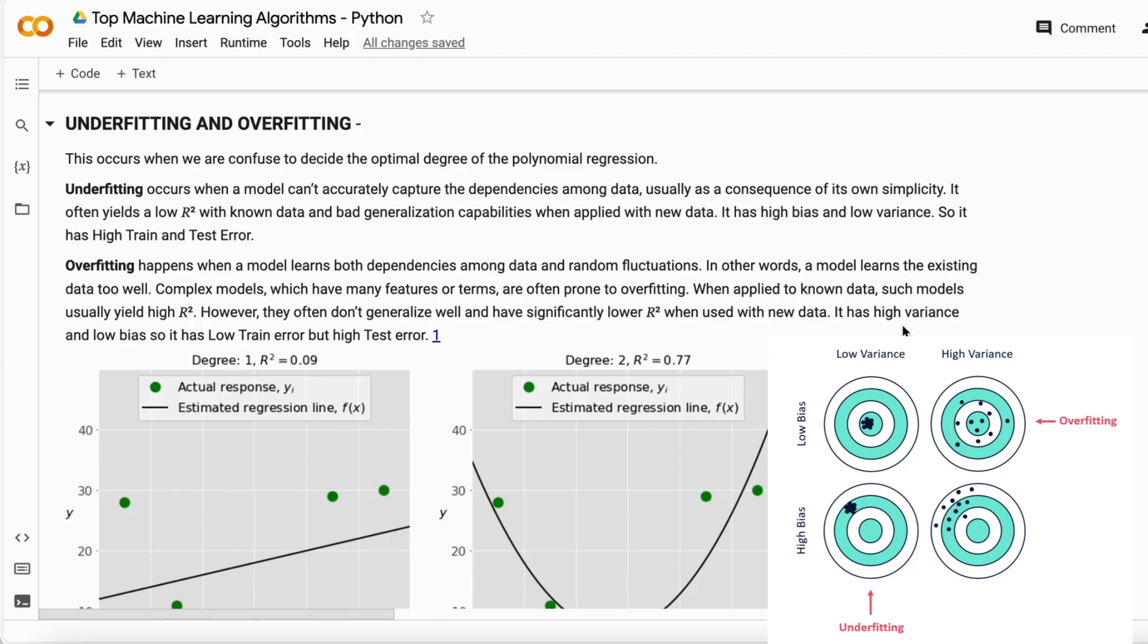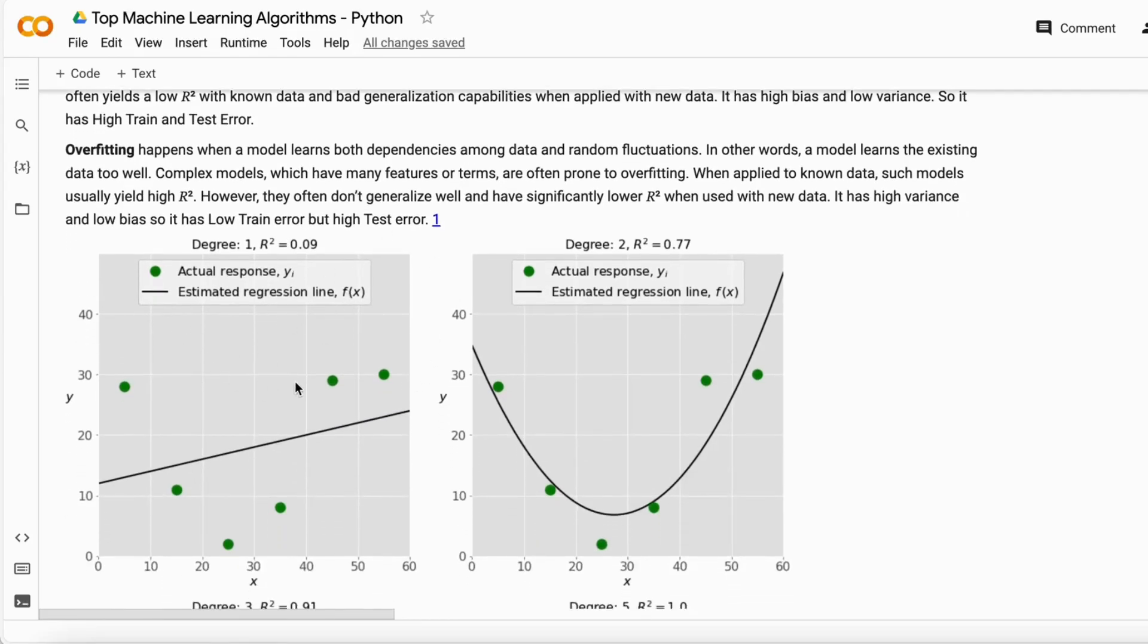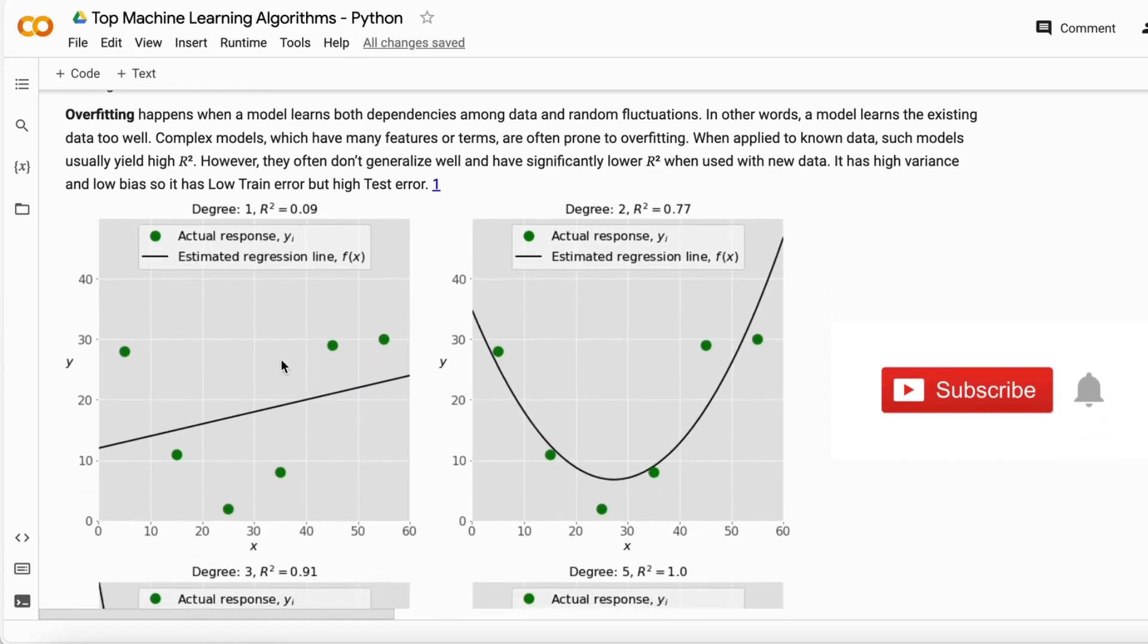If you build a machine learning model that is too complex and you want to get the accuracy of that model on the train data, it will give you good accuracy. But if you try to get the same accuracy on the testing data, it will give you very less accuracy. I'll show you these graphs over here. I just built these graphs by using polynomial regression.